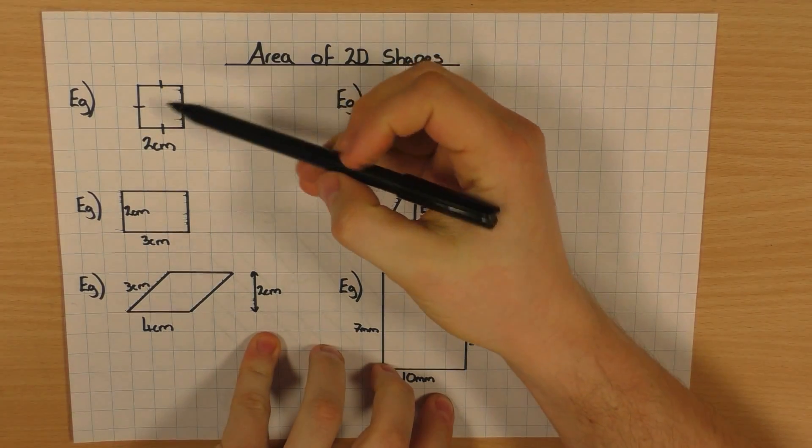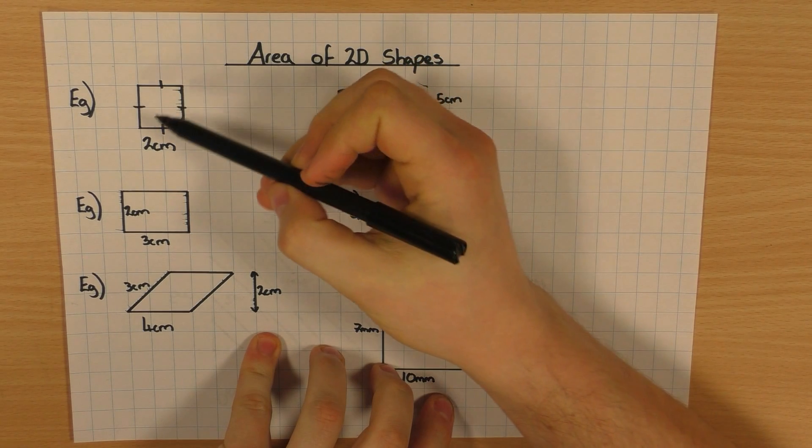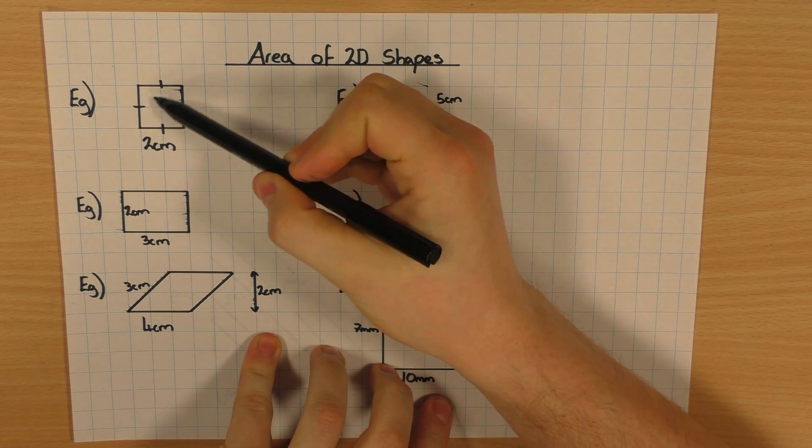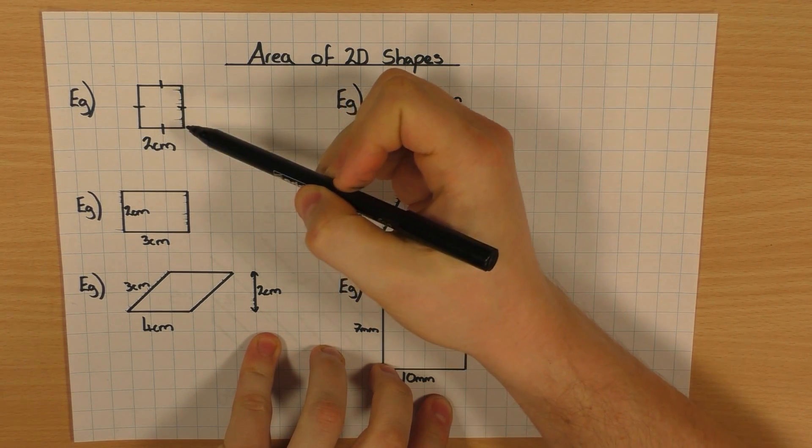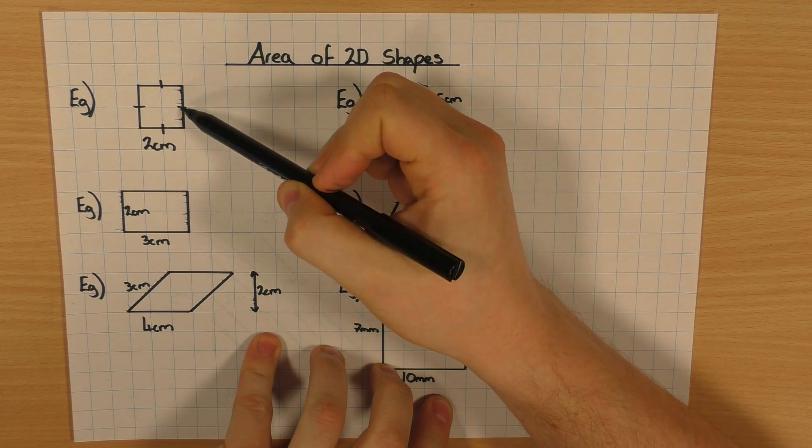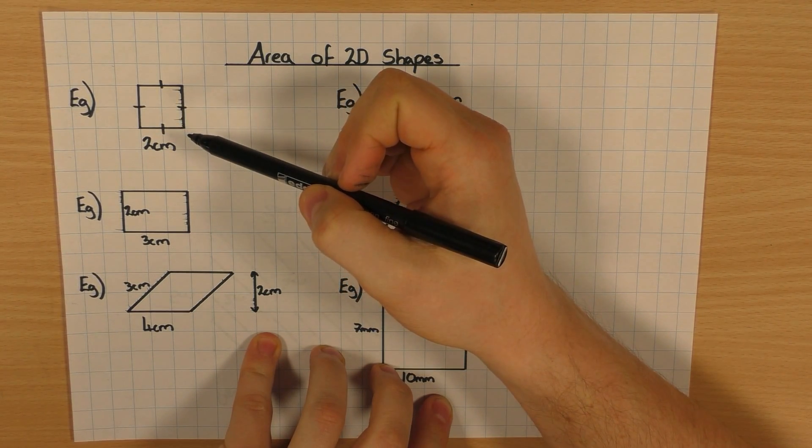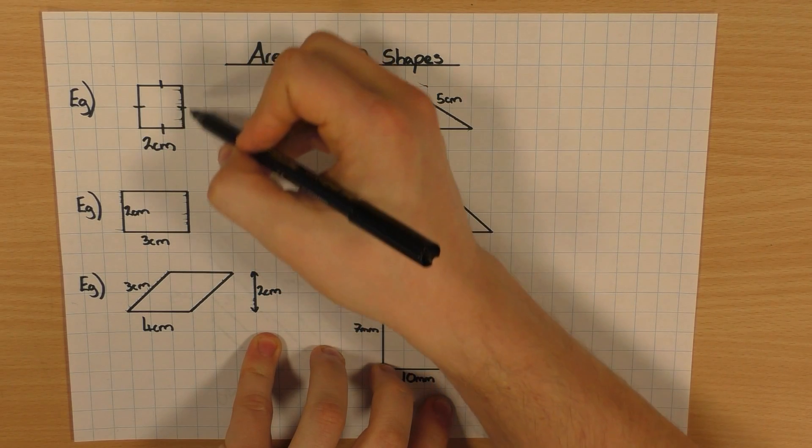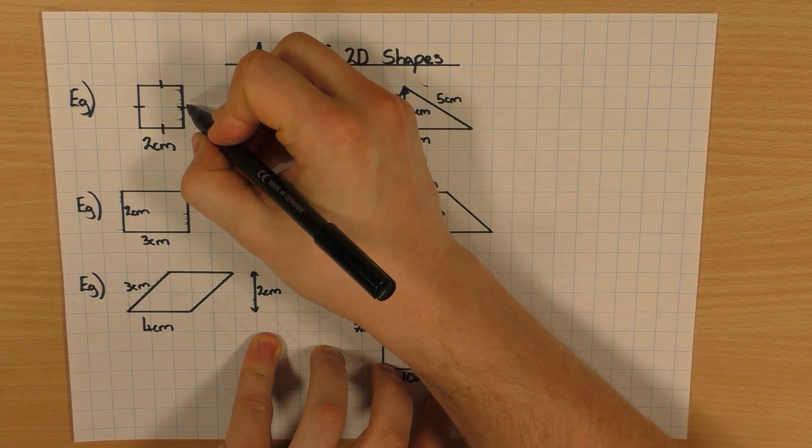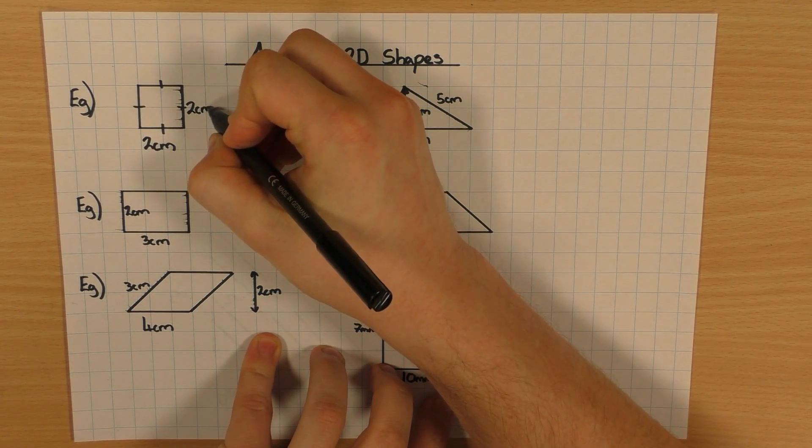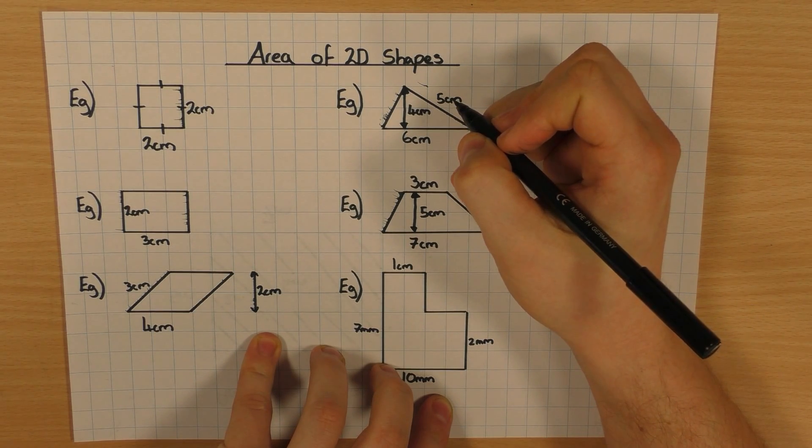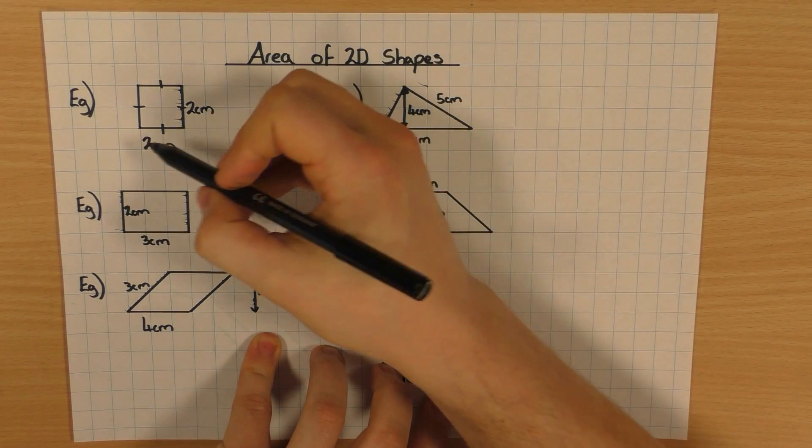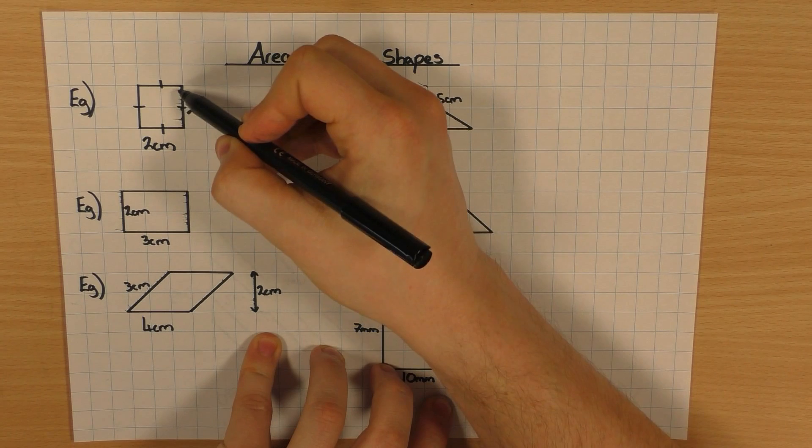So in this first example here, I've got a square. I can tell it's a square because I've got these little dashes on each side, which means that this length is the same as this length, which is the same as this length, and so on. And because they're all the same length, because these dashes give it away, that side there is also going to be 2cm. And to work out the area of the square, it's really easy. We just do base times the height.